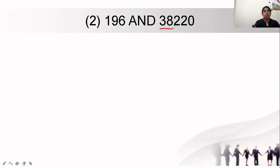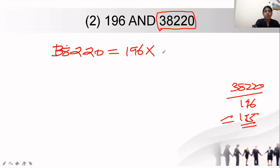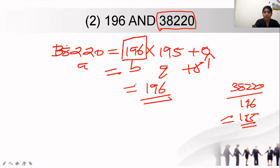Next question: HCF of 196 and 3820. Most students will divide and get 195, but that is wrong. The greater number is 3820: 3820 equals 196 into 195 plus 0. The remainder is 0, so the b value of that step is 196 — not 195. The answer is 196 because that is the b value where the remainder becomes 0.